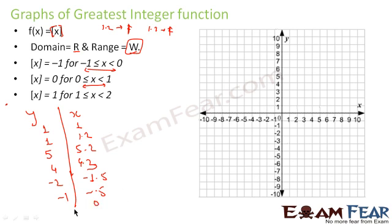Now let us plot these points. x equal to 0, y equal to 0. x equal to 1, y equal to 1. x equal to 1.2, y equal to 1. x equal to 5.2, y equal to 5. x equal to 4.3, y equal to 4. For x in the range minus 1.5, y equal to minus 2.